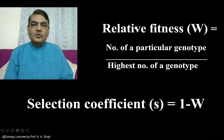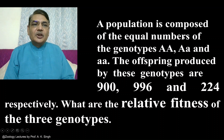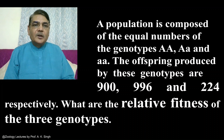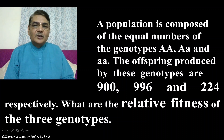We can understand these two parameters and their calculation by considering this example. Suppose a population is composed of equal numbers of genotypes AA, Aa, and aa. This means a specific locus is represented by two alleles, giving three possible genotypes. The offspring produced by these three genotypes are 900, 996, and 224 respectively.